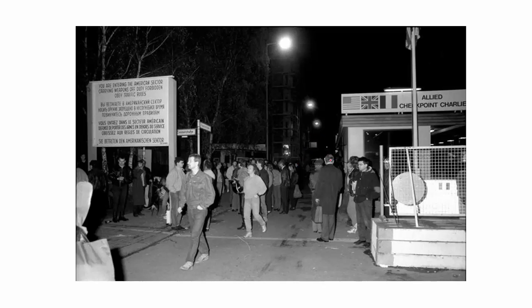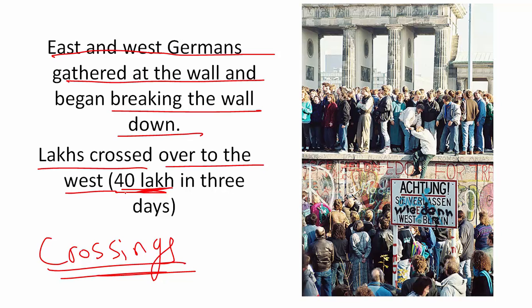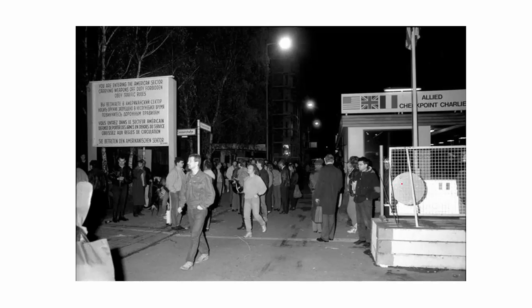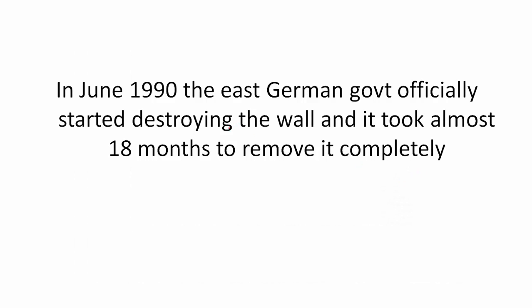East and West Germans both gathered at the wall and began breaking it down with whatever they could find — hammers, chisels, and whatever instruments they had at home. Lakhs of people crossed over to the West. The guards at the border had not been informed about the decision, so initially they tried to stop people, but there were so many that they let them pass. In the next three days around 40 lakh people crossed over from East to West Germany. People celebrated, standing on top of the wall and helping others cross.